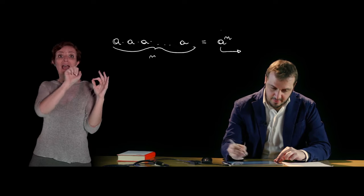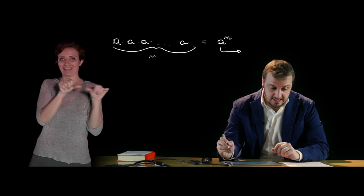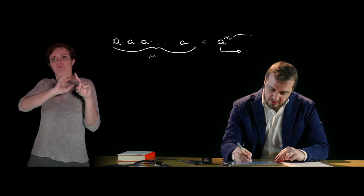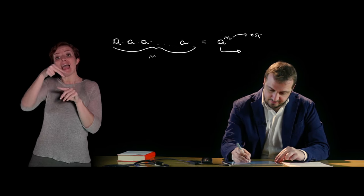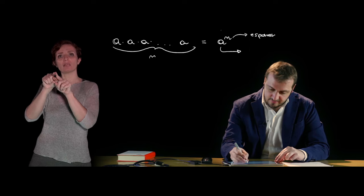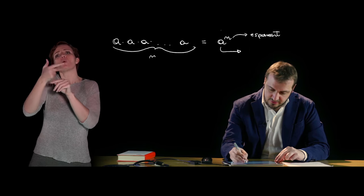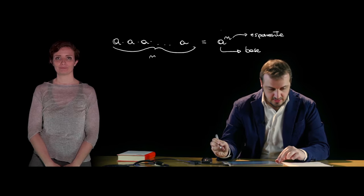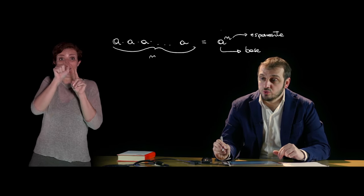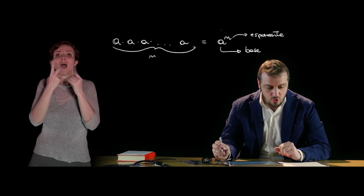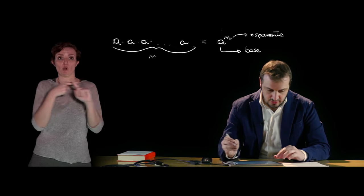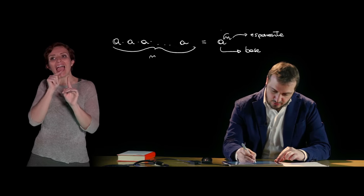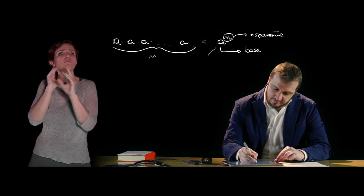where a is called base and indicates that the factor is multiplied by itself, and n is called the exponent, which represents the number of times in which the factor is multiplied. So, if the exponent is greater than 1, we can define the power as the product of many factors, which are indicated by the exponent, all equal to the base A.